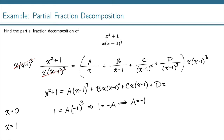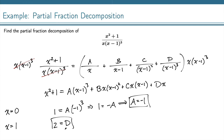Plugging x equals 1 in, we have 1 squared plus 1, which is 2. And then every term that has an x minus 1 as a factor is going to be 0. So all of those terms disappear, and we're just left with D times 1, which is just D. So now we know A equals negative 1, and we know D is equal to 2.